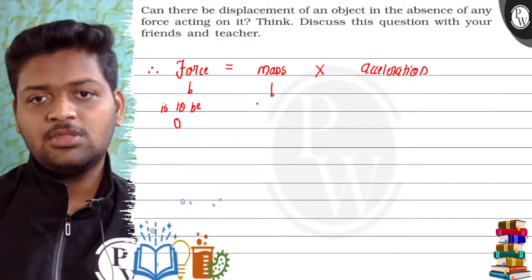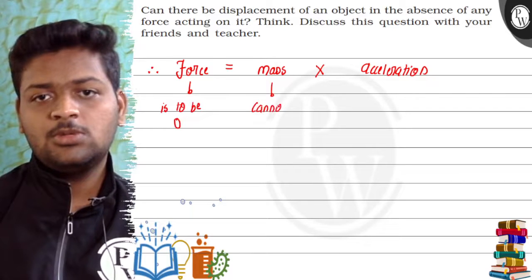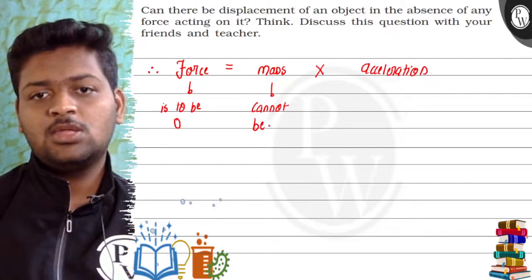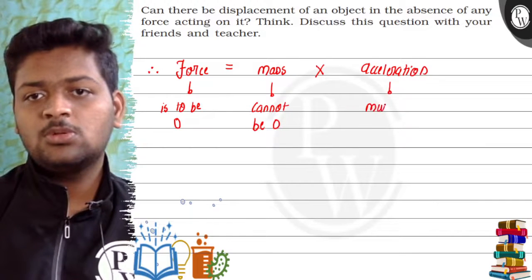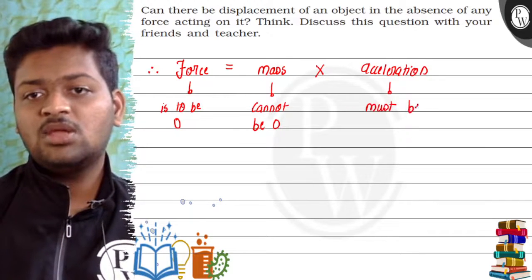Force is 0. Mass cannot be 0. So which thing will be 0? Acceleration must be 0. So this will be our condition that force is 0.